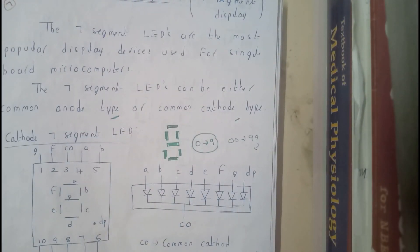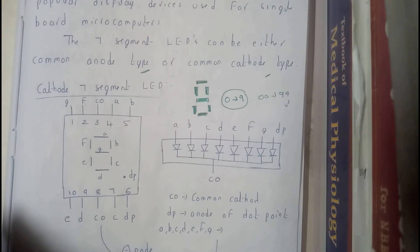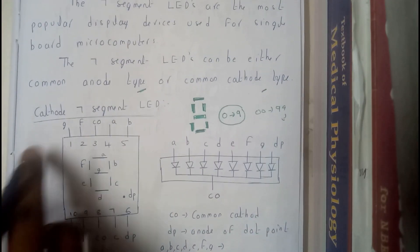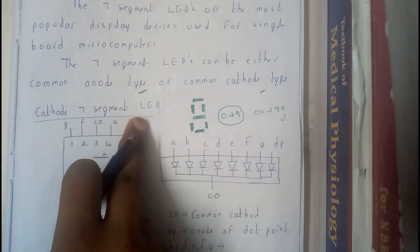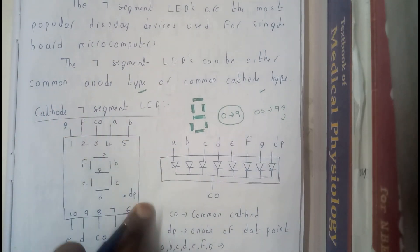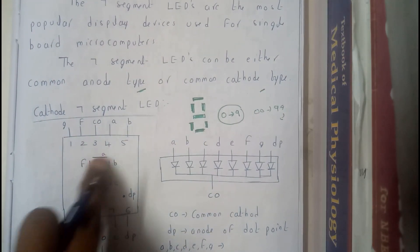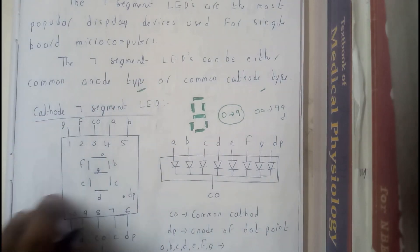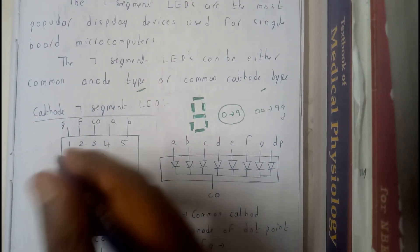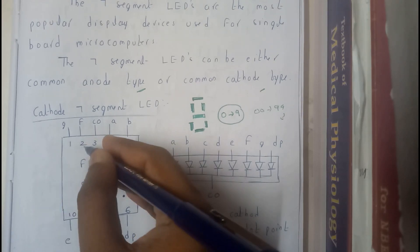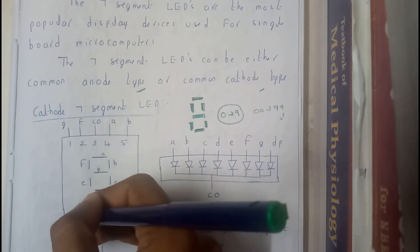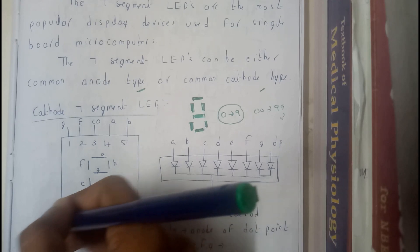Okay, so the seven segment LED display can be either common anode type or common cathode type. According to diagrammatically they seem almost similar, but there will be small changes. So first let us draw the cathode seven segment LED. Just draw a box, draw this representation of eight with cuts.